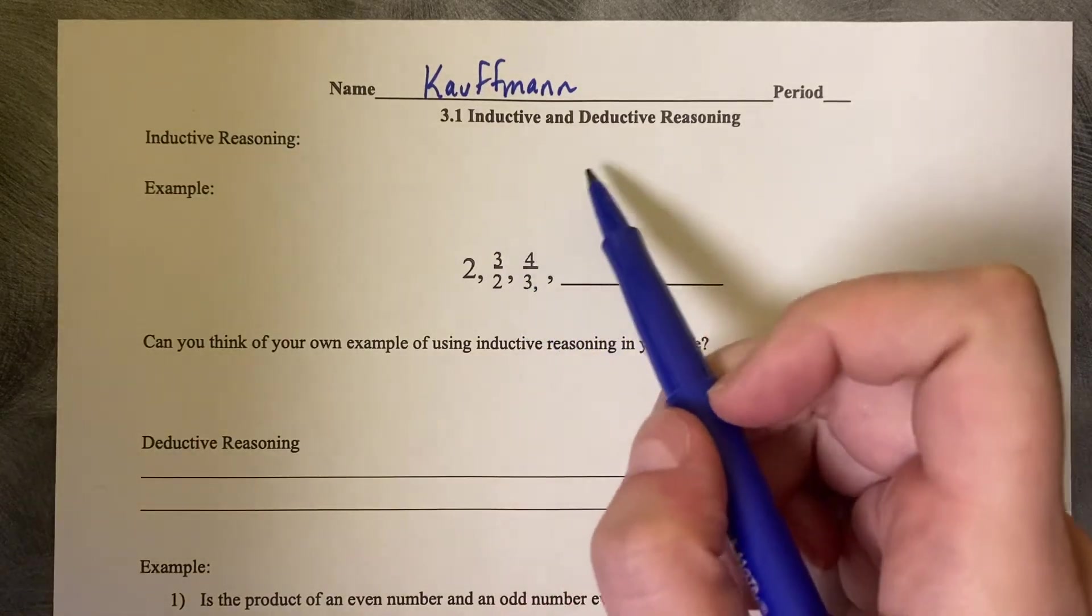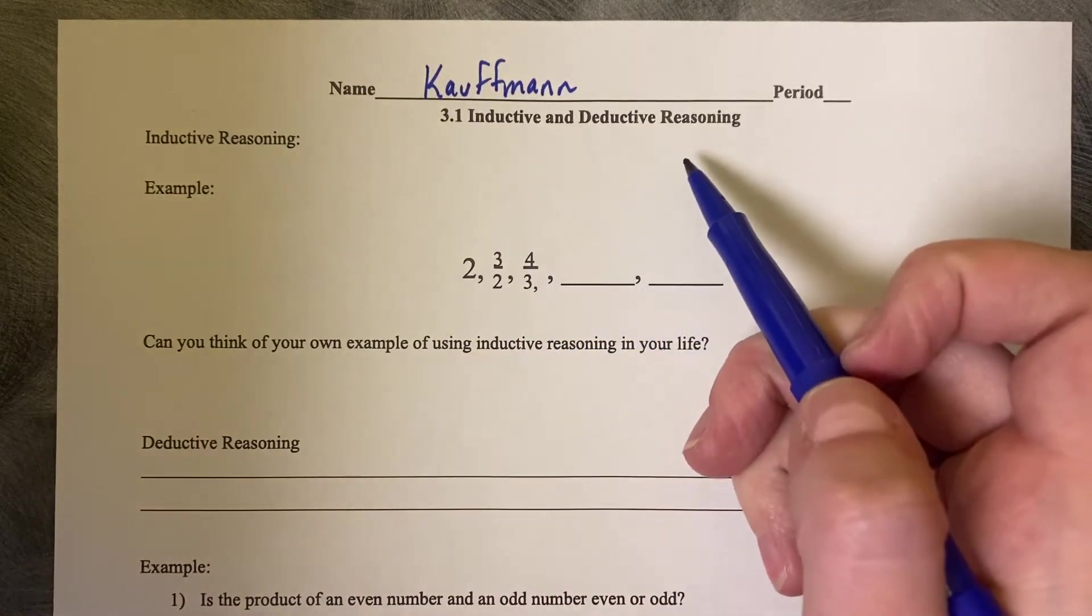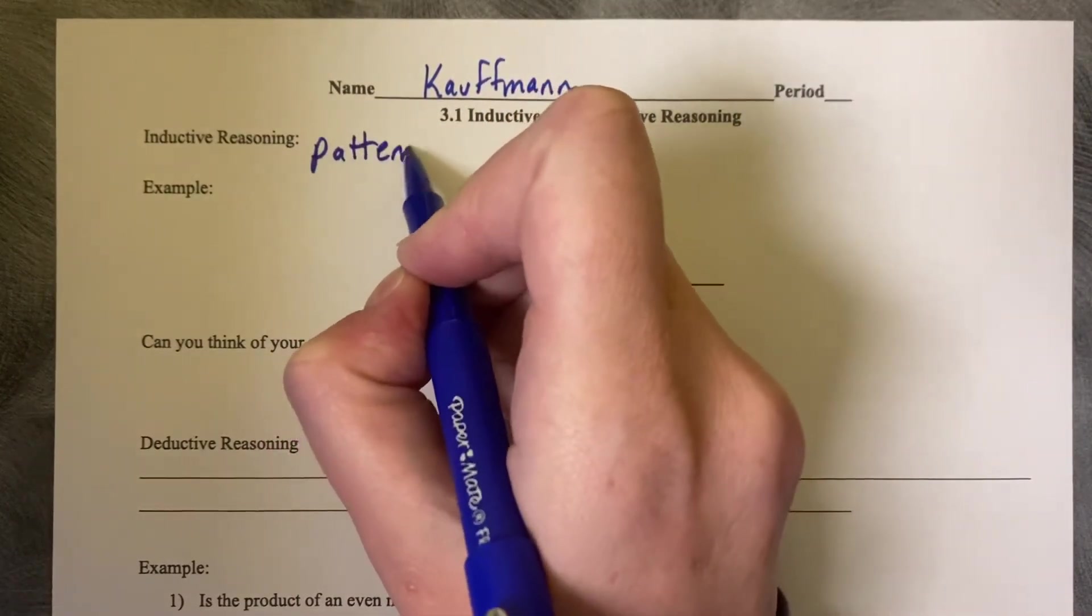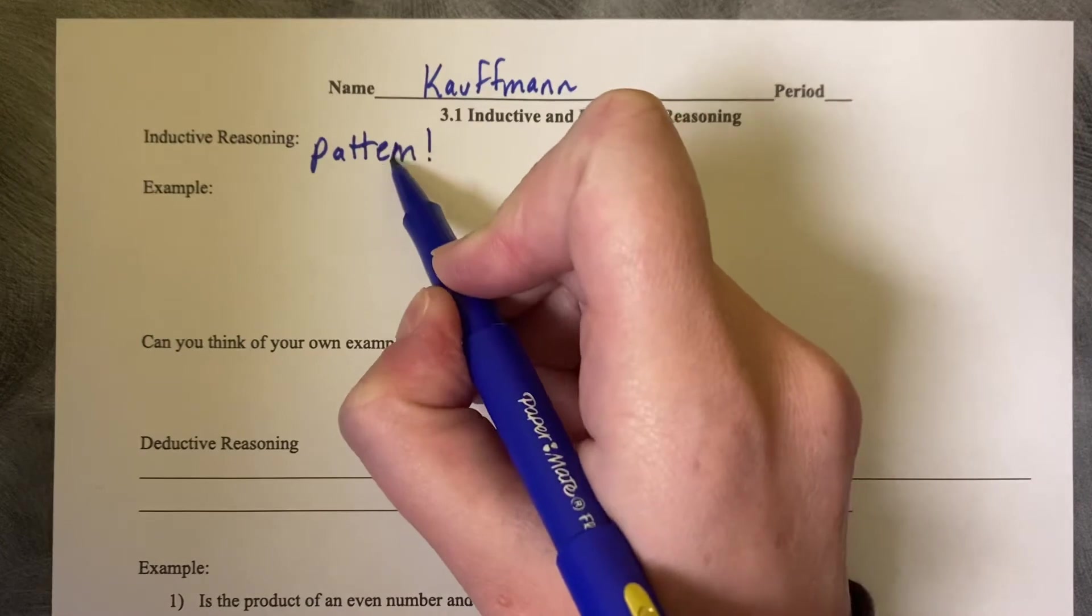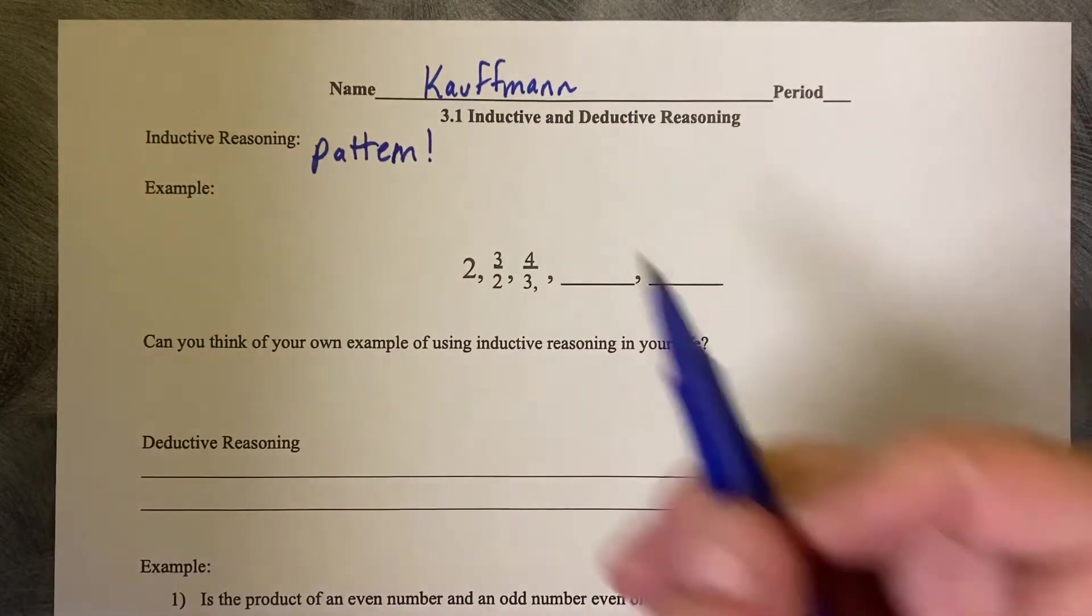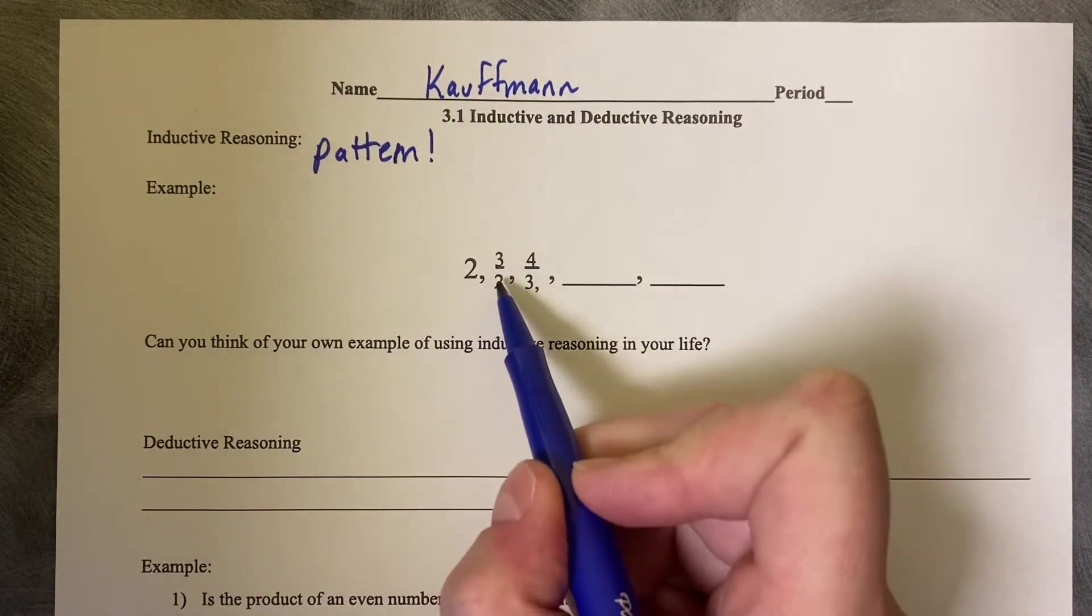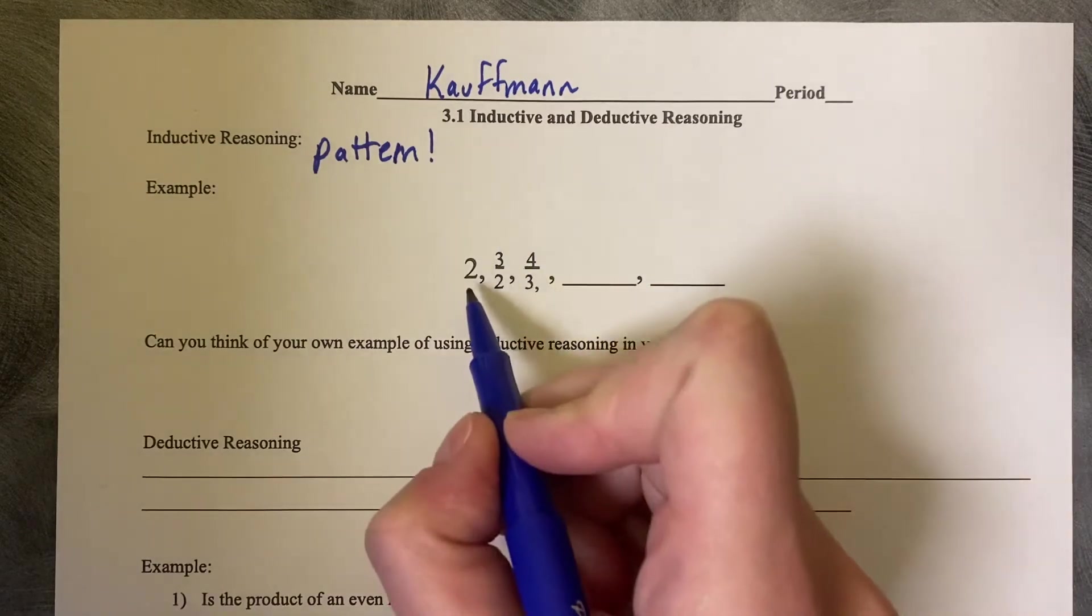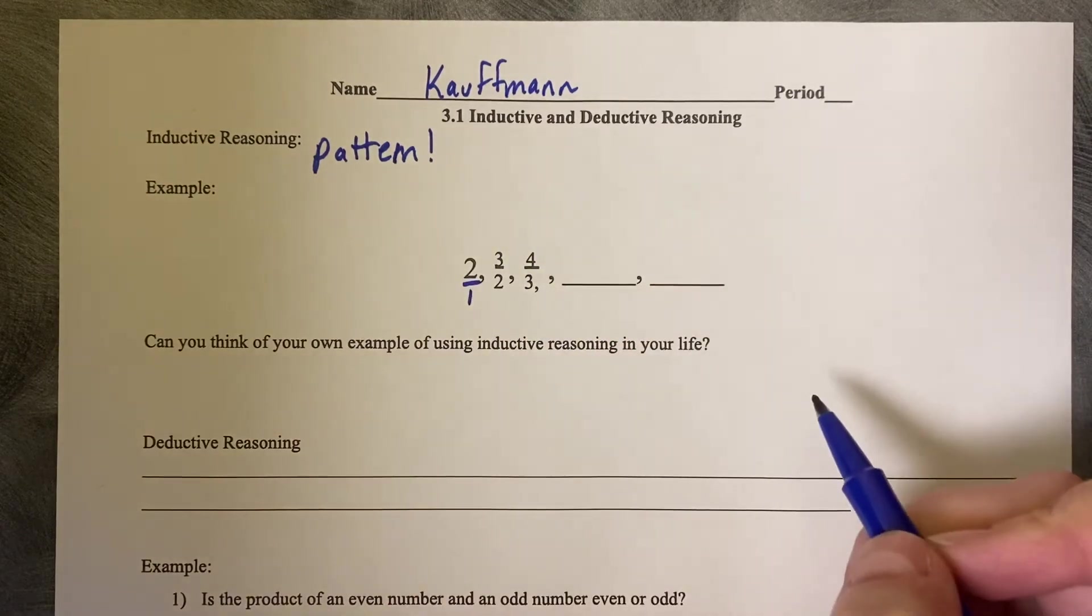3.1 inductive and deductive reasoning. Inductive reasoning is a pattern. An example is 2, 3 halves, 4 thirds, blank, blank. If I put this as 2 over 1, it's a little clearer to see the pattern.